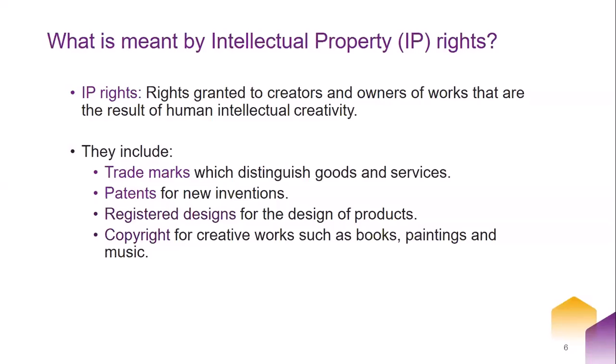Patent is another type of IP — it is an exclusive right granted for an invention. Registered design protects only the shape or appearance of a product, giving its owner the exclusive right to that design. Finally, copyright is the protection offered for creative works such as books, music, and literary works. You get some types of protection automatically and others you have to apply for. We will be focusing on copyright today.